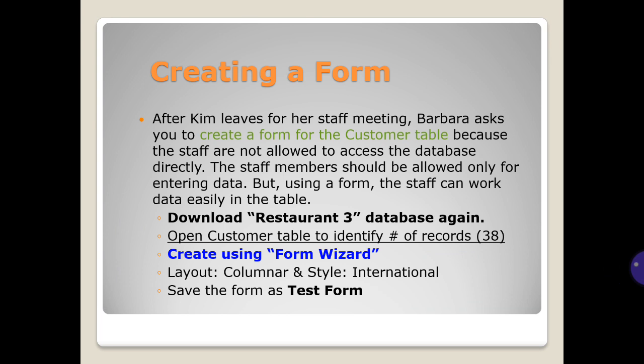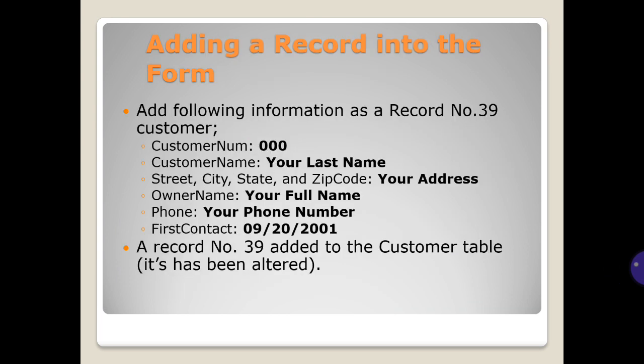Create using the Form Wizard with layout columnar and style international, then save the form as 'test form'. When adding a record into the form, add the following information: customer number 3, and a customer name, your last name, street, city, state, and zip code.